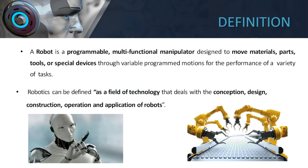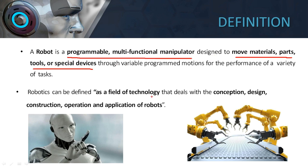We'll understand the definition of the robot and robotics and then move further to understand the different things discussed in the objectives. A robot is defined as a programmable multifunctional manipulator. It is programmable, meaning you can program the robot according to your instructions — you can program it for one particular set of applications and then completely change the instructions to make the robot do another task.